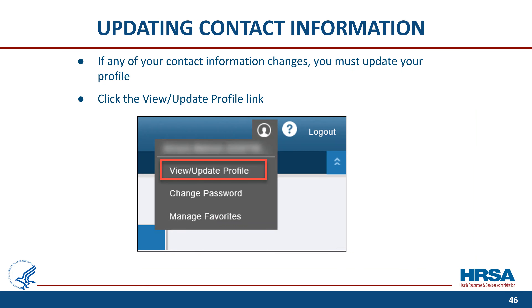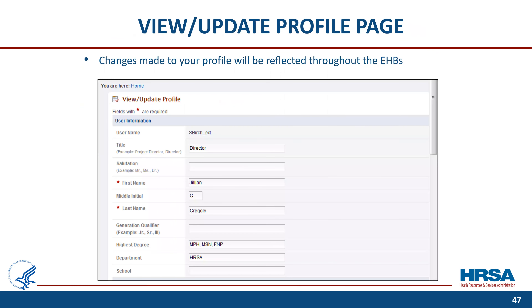Now that you have already registered, let's look at how you can verify or change the email address or any other information associated with your account. If any of your contact information changes, you must update your profile. After hovering on your username in the top right corner of the page, click the View/Update Profile link, as shown outlined in red, to view or update your information. Any changes you make to your profile will be reflected throughout the EHBs and will be visible to your project officer and grants management specialist.